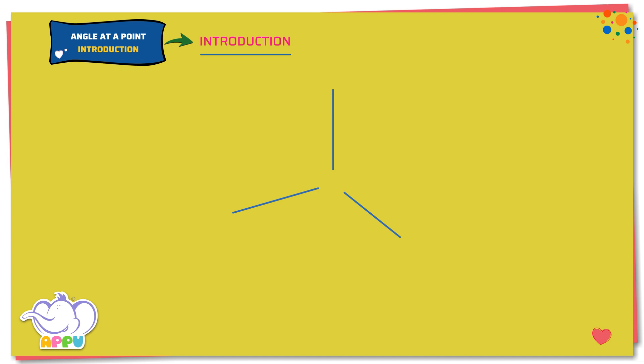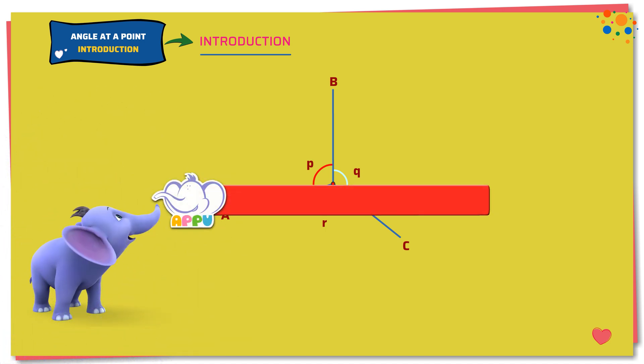Here three lines meet at a point O, forming three angles: Angle P, angle Q and angle R. Sum of all the angles at a point is 360 degrees.